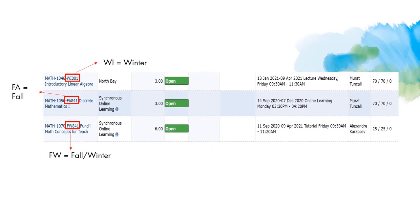There will be another video assisting you with WebAdvisor, but for now let's take a quick look so you know how to tell if a course is available in the fall or the winter. Here is a quick screenshot of the math offerings in WebAdvisor, just to give you an example of how to tell which semester a course is offered. Course codes are followed by two letters indicating what term the course will be offered in: FA meaning the course runs from September to December, WI meaning the course runs from January to April, and FW meaning the course runs from September to April, or all school year.